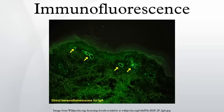Immunofluorescence can be used on tissue sections, cultured cell lines, or individual cells, and may be used to analyze the distribution of proteins, glycans, and small biological and non-biological molecules. It can also be used in combination with other non-antibody methods of fluorescent staining, for example, use of DAPI to label DNA.